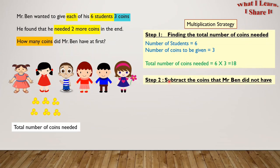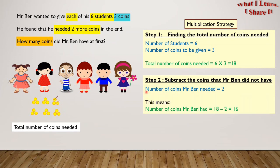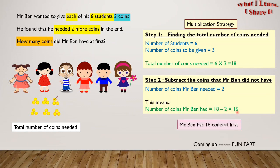Step two: subtract the coins that Mr. Ben does not have. Let's cut the coins that he does not have. Number one, cut. And number two, cut. Can you tell me how many coins are left now? Let's write it in a proper way. Number of coins Mr. Ben needed equals two. This means the number of coins Mr. Ben had equals 18 minus two equals 16. Mr. Ben has 16 coins at first. Yay! We solved the problem with the multiplication strategy.